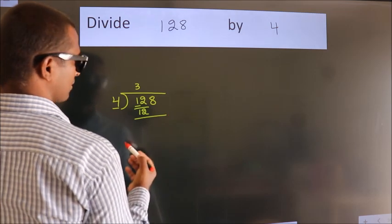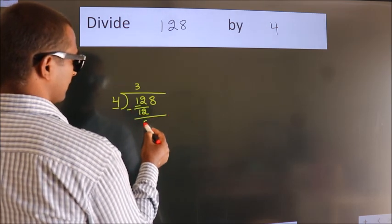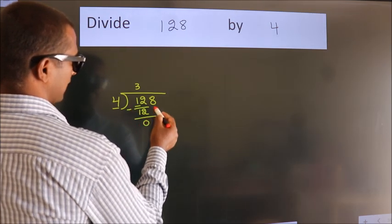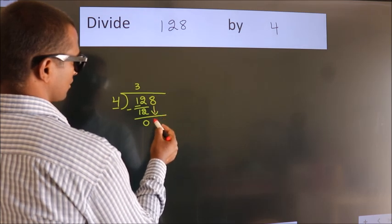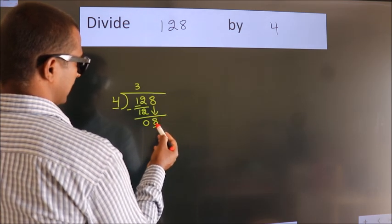Now we should subtract. We get 0. After this, bring down the next number. So 8 down.